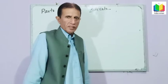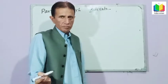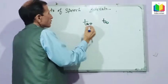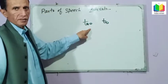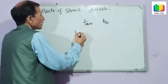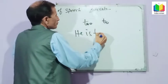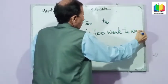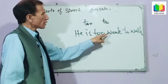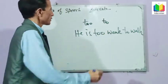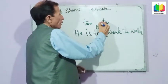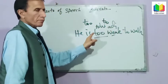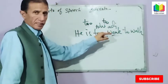Students, note that 'too' is negative. For example: he is too weak to work. So 'too' gives a negative sense here. 'Too' is an adverb, and 'weak' is the adjective — so 'too weak' carries a negative meaning.